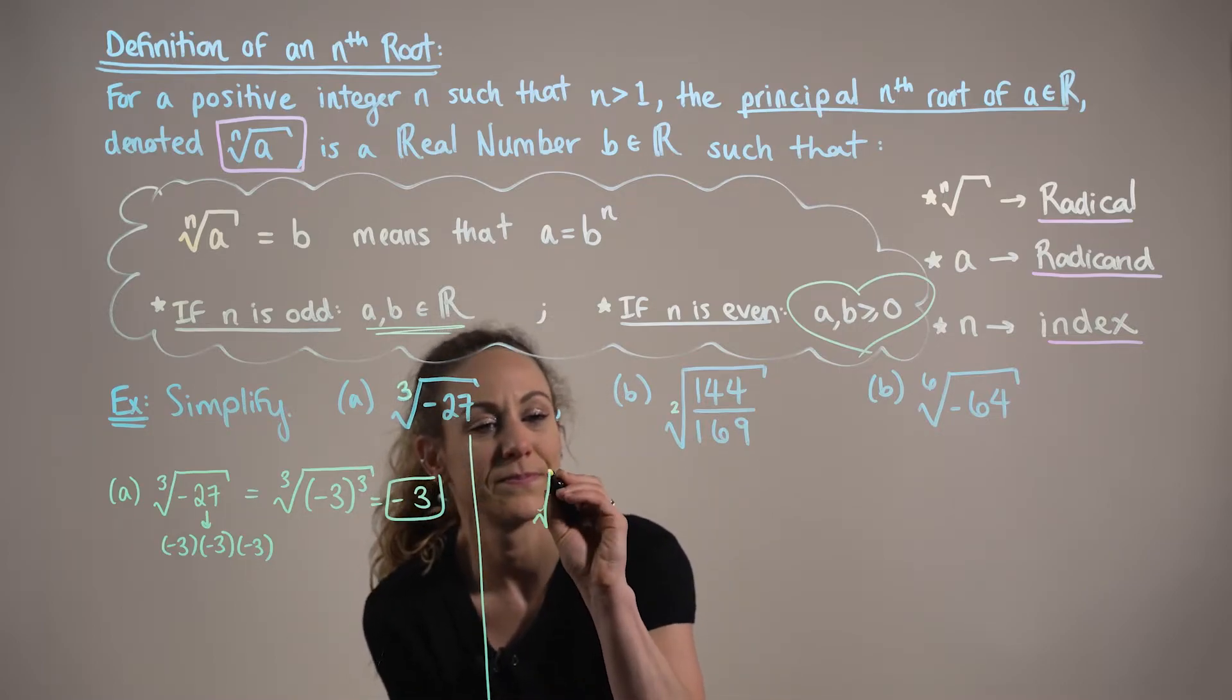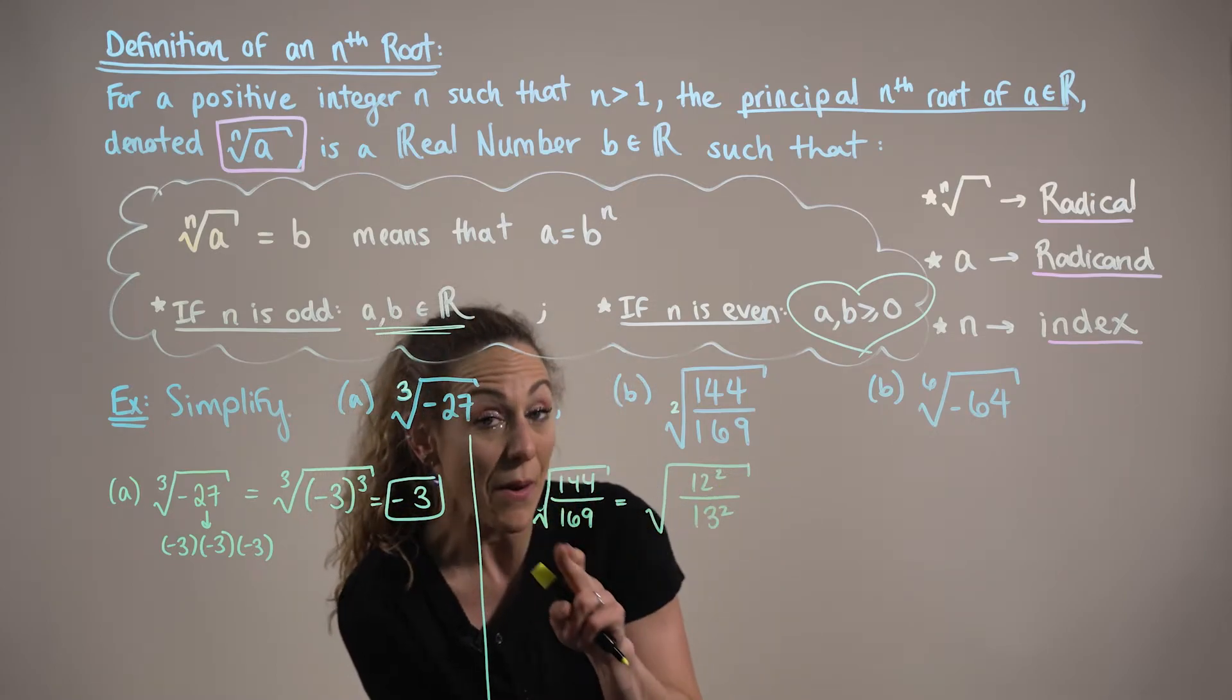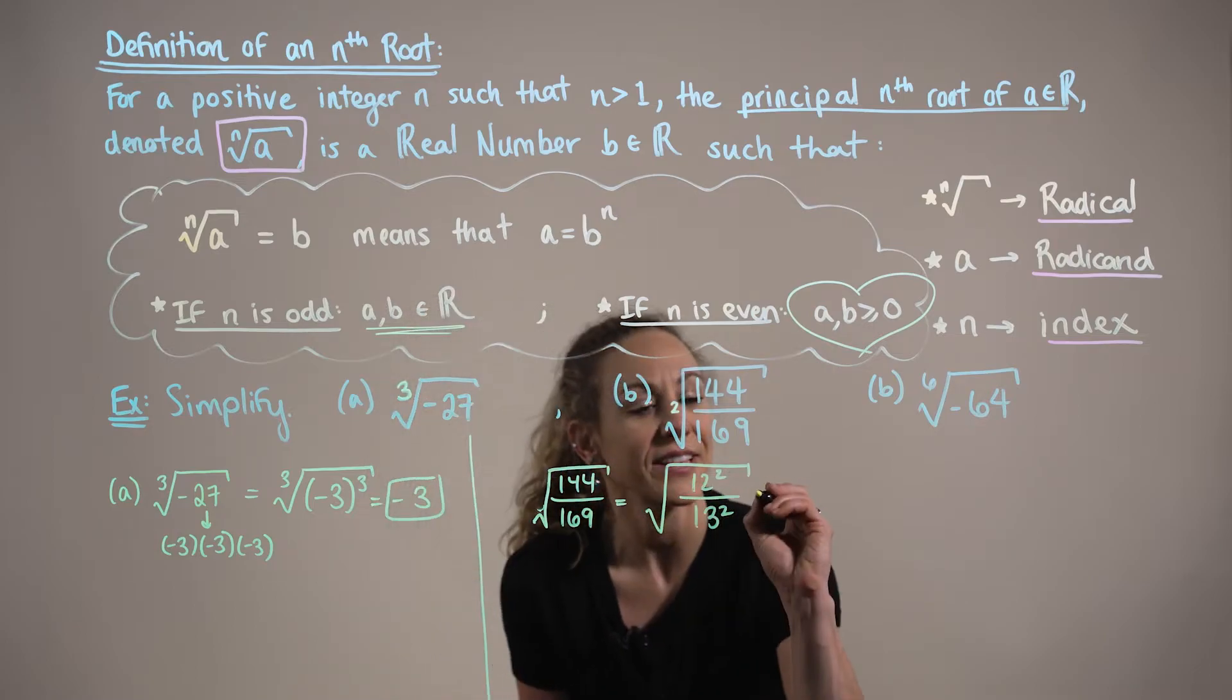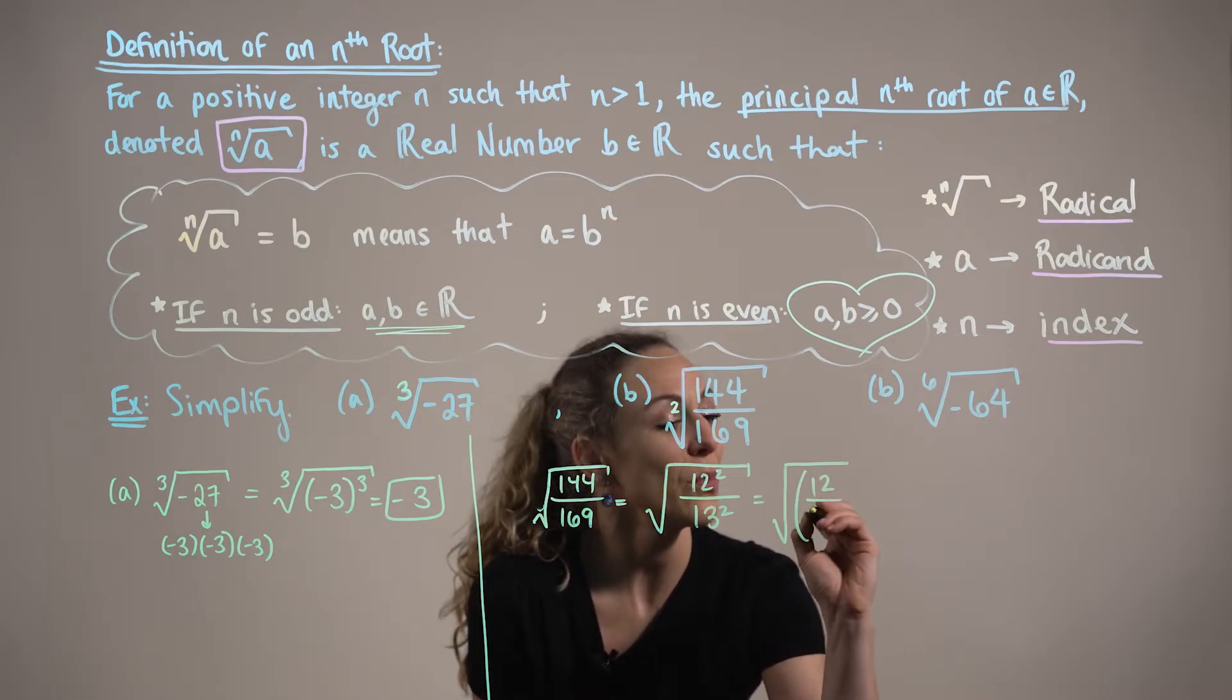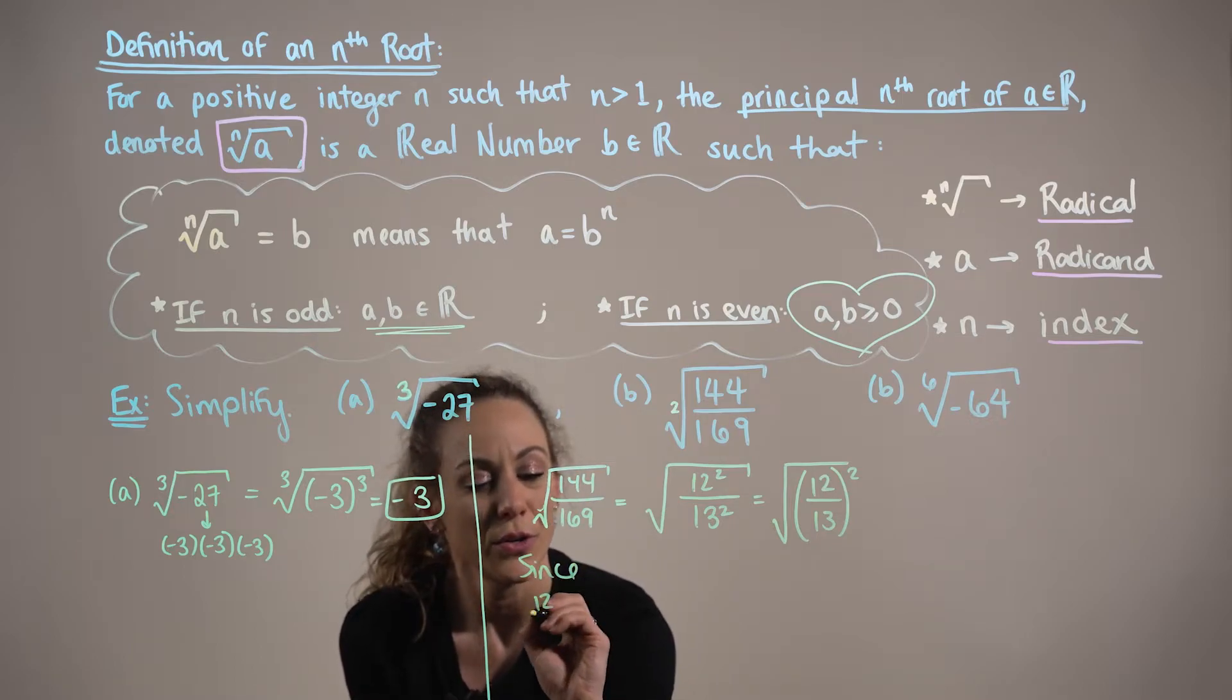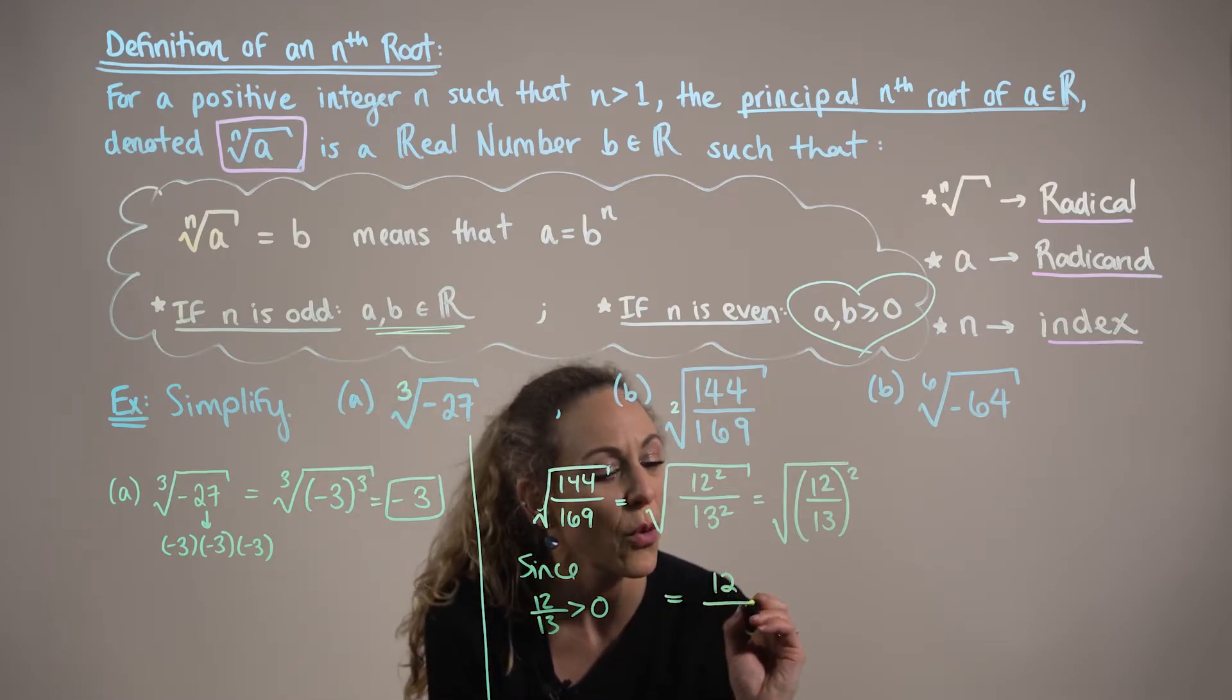So, we want to rewrite this. We know that 144 can be written as 12 squared, and that 169 can be rewritten as 13 squared. And using the properties of exponents, we can further rewrite this as the square root of 12 over 13 squared. And again, we can observe here that since 12 over 13 is non-negative, we can simplify our radical expression to 12 over 13.